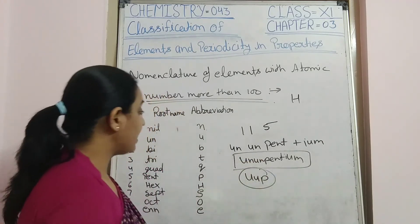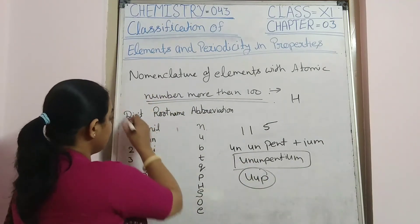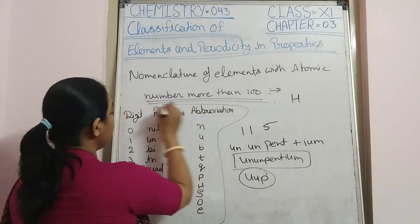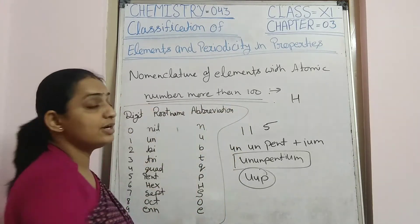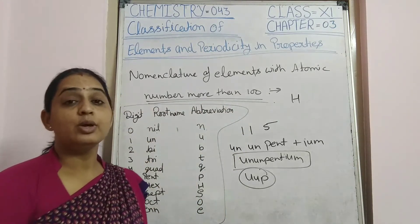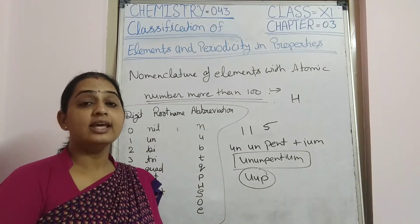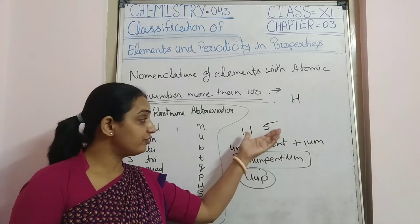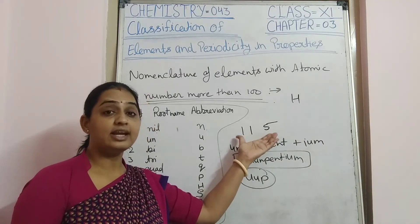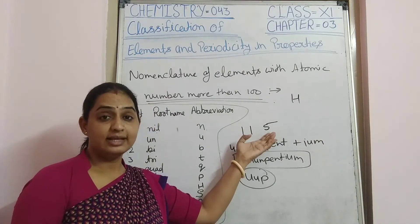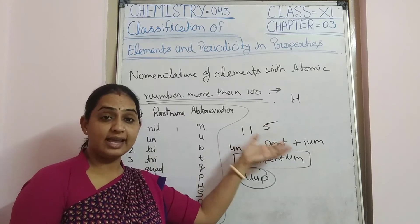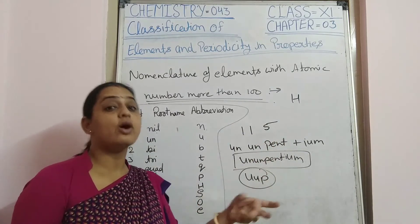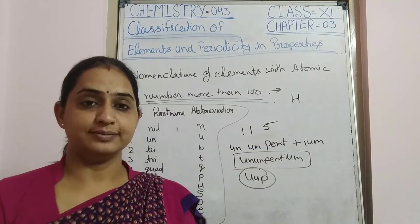Using these digit root names and abbreviations, we can give the name and symbol of any atomic number element, whether it has been discovered or not.